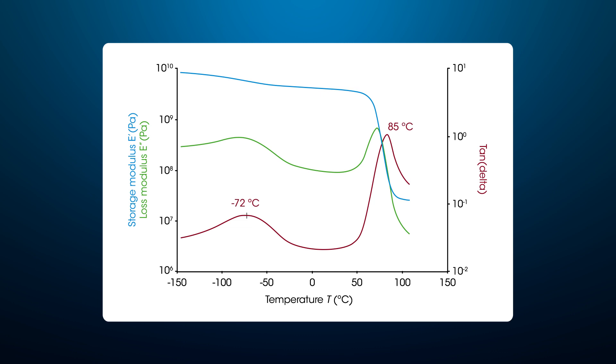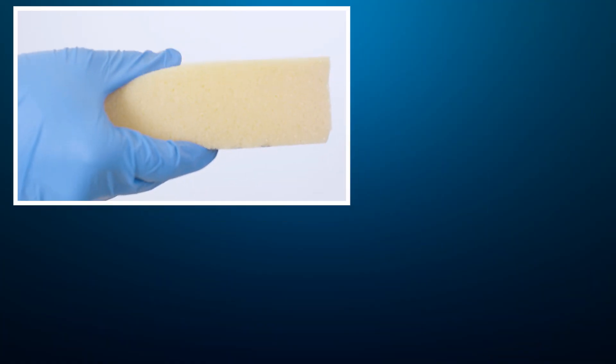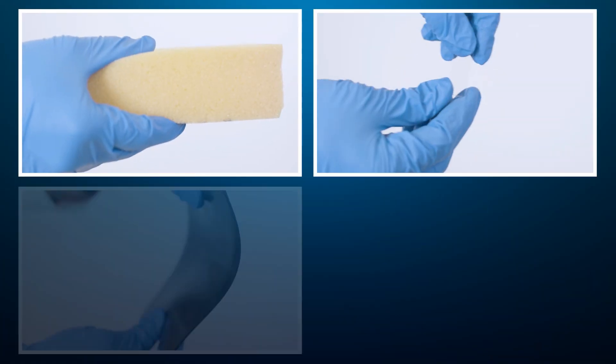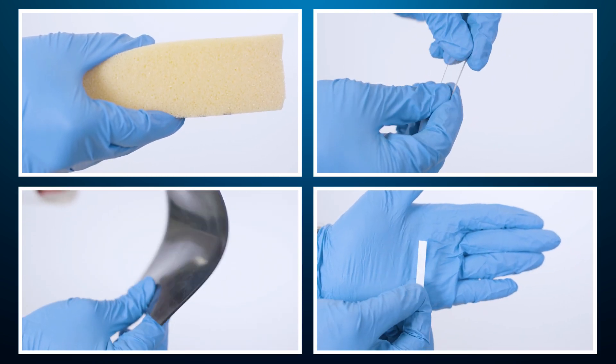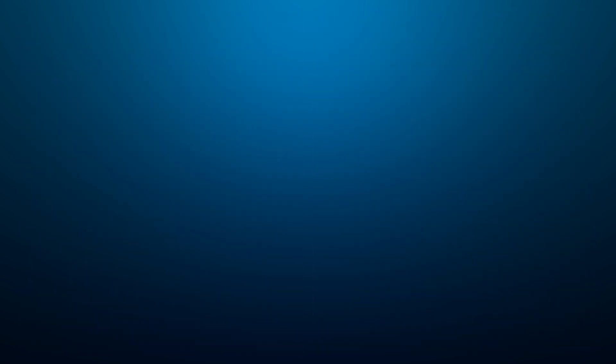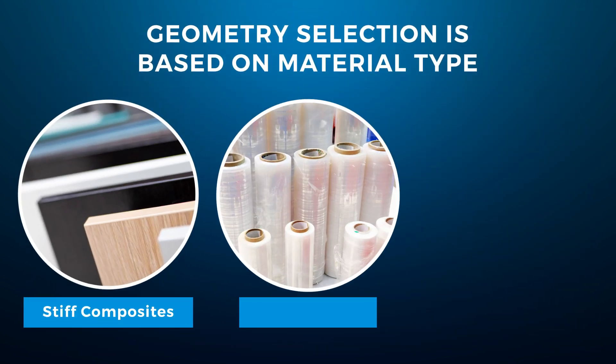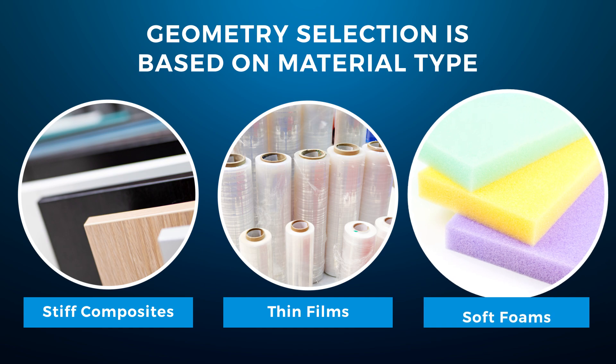Selecting appropriate measurement geometry based on the sample's dimension and stiffness is critical to ensure good and reliable results. Solid samples come in a wide range of materials, differing in their shape and stiffness. Here, we will look at options available for testing solid samples, ranging from stiff composites to soft foams.